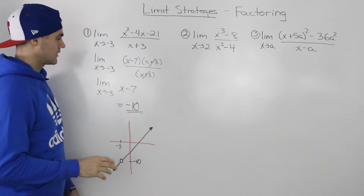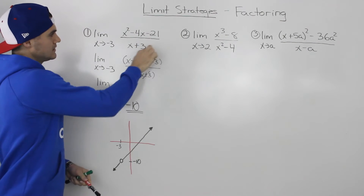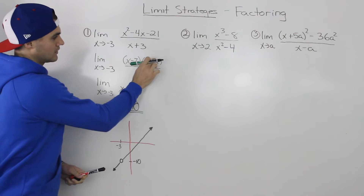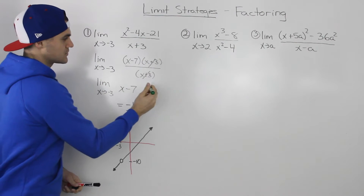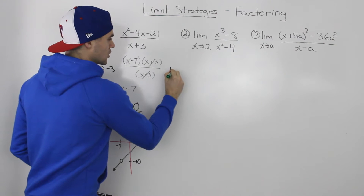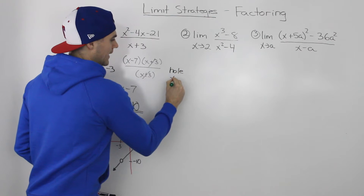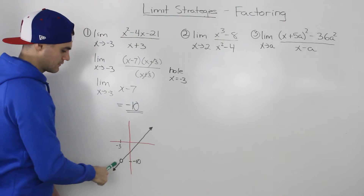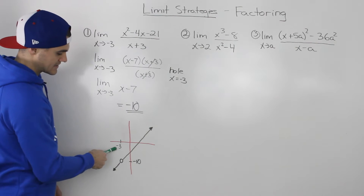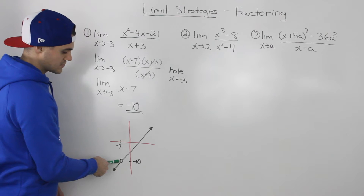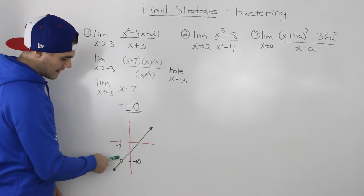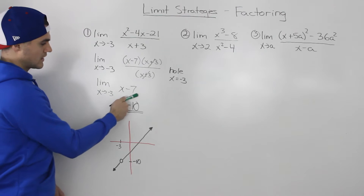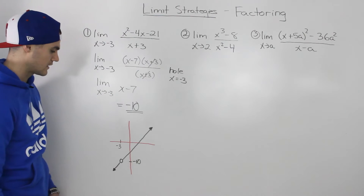How does this look graphically? If we take this expression and graph it, because we factored it and the factor of x plus 3 cancelled out, we know that there's a hole at x equals negative 3. It's just the line x minus 7, but at the x value of negative 3 there's a hole, and the y value of that hole is negative 10.